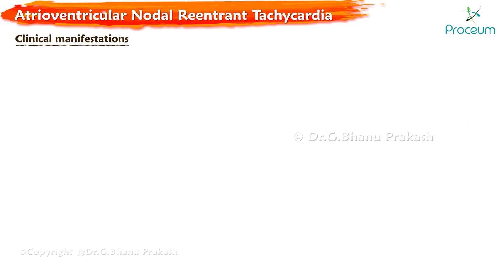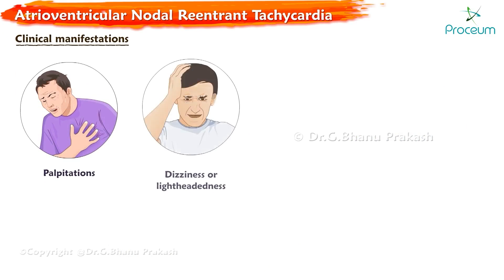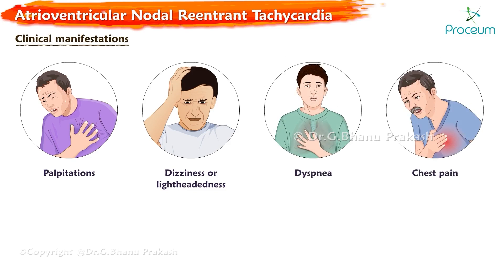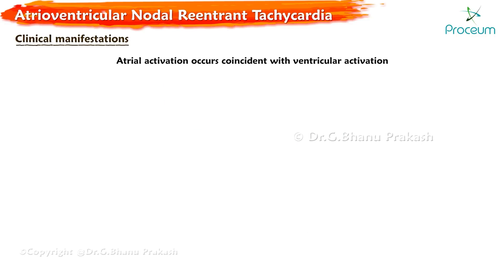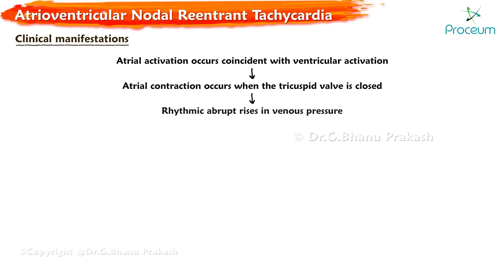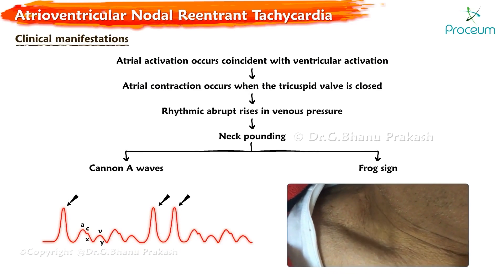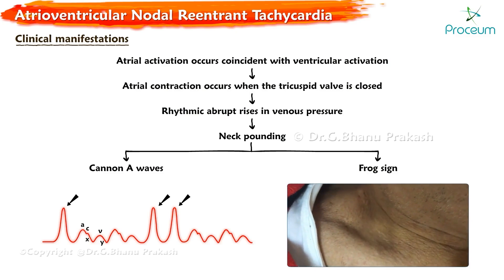Patients with AVNRT most commonly report palpitations, dizziness or lightheadedness, dyspnea, and chest pain. Because of the paroxysmal nature of the arrhythmia, the onset and termination of symptoms are usually sudden. Because atrial activation occurs coincident with ventricular activation during typical AVNRT, atrial contraction occurs when the tricuspid valve is closed, causing rhythmic abrupt rises in venous pressure, resulting in a sensation of neck pounding. Simultaneous contraction of both atria and ventricles produces canon A-waves, also known as the frog sign.